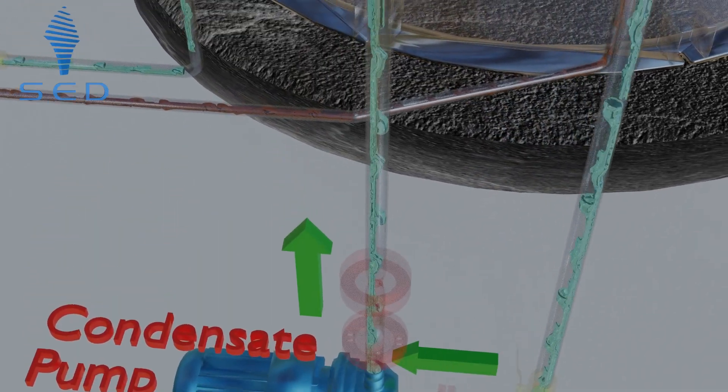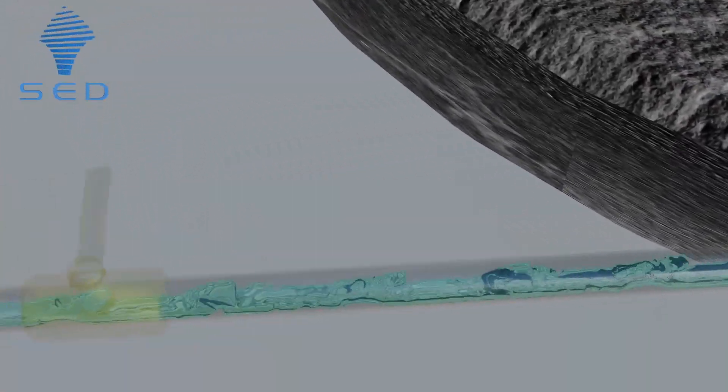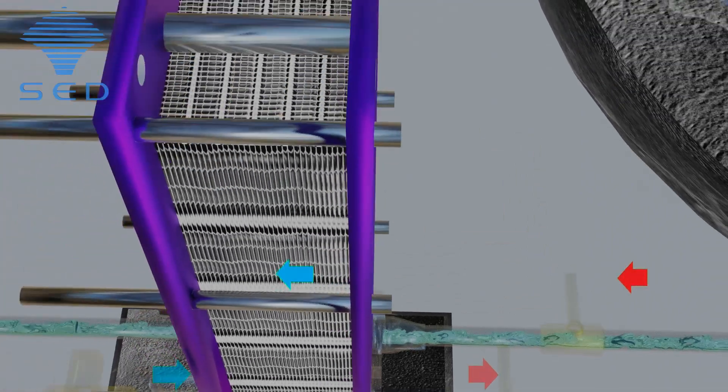This hot water is passed through the PHE via a condensate pump where it loses its temperature and becomes cold water which is further collected in a condensate tank.